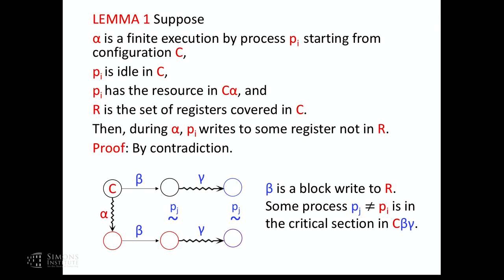This is a proof by contradiction. Suppose we're in this situation and suppose that process PI only writes to registers in R. We look at this block write beta — because R is covered, we can perform a block write. These are just write steps by the covering processes, since PI is idle and not covering anything in C.